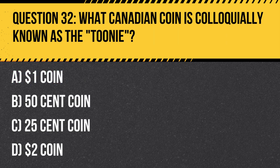Question 32. What Canadian coin is colloquially known as the toonie? A. $1 coin. B. $0.50 coin. C. $0.25 coin. D. $2 coin.